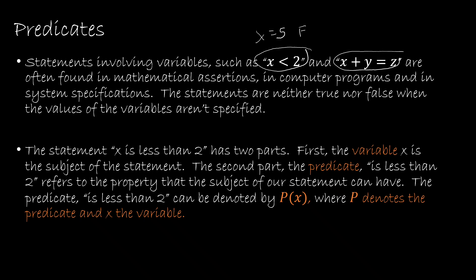The statement x is less than 2 has two parts. The variable is obviously x — it could be any variable, just like in normal algebra, and it is the subject of the statement. The second part is called the predicate, which is what we're learning about. The predicate 'less than 2' gives us some sort of property that the variable is subject to. We denote the predicate with p and the variable with x.